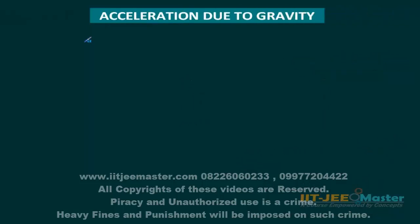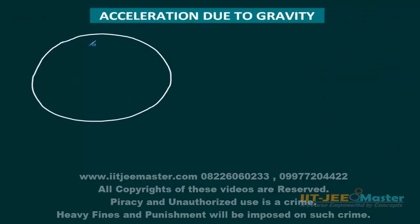Now we are looking at acceleration due to gravity. Suppose we have an object of mass small m near the Earth, and the mass of Earth is capital M. The force on this object due to Earth is F, which equals G capital M times small m upon R squared.